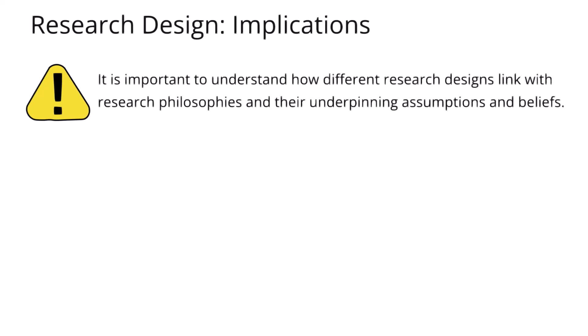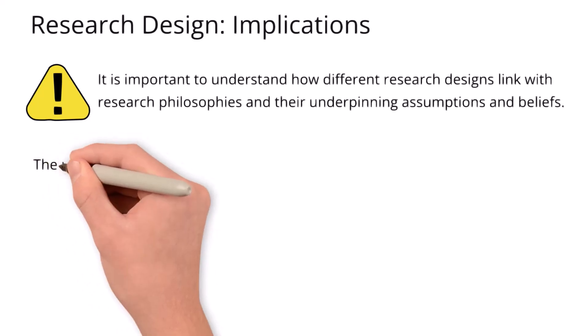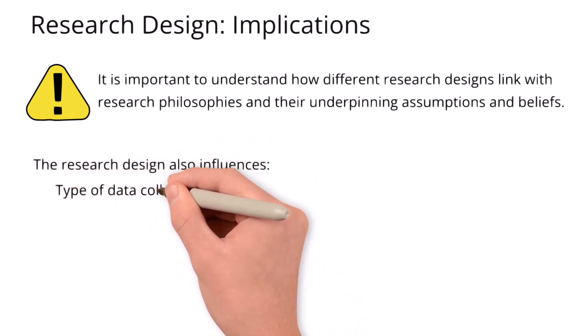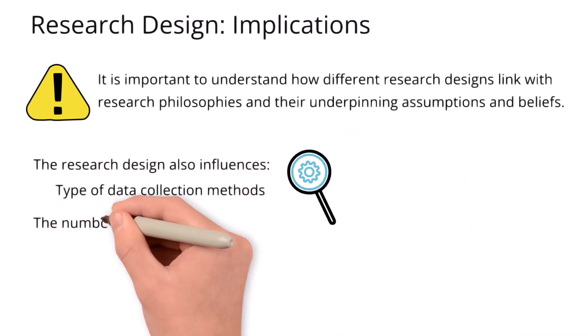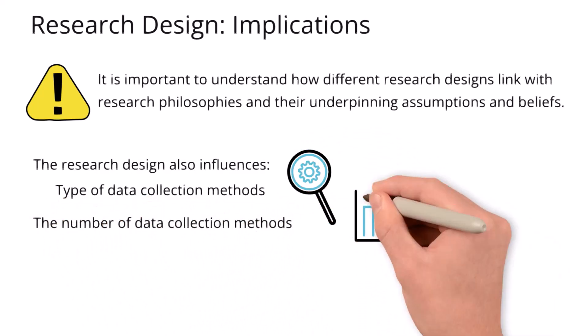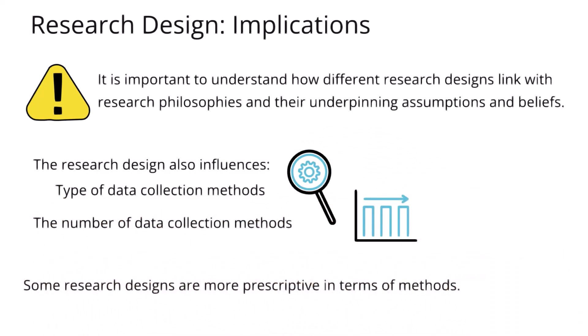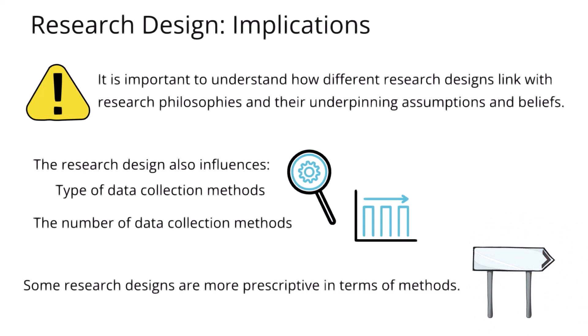Research design also works the other way, looking inward at the more practical research decisions. For example, a research design might influence the type of methods chosen and the number of methods selected. Some research designs are more prescriptive — proposing only one method or one type, such as only quantitative or only qualitative methods — whereas other research designs put forward that multiple methods are needed.